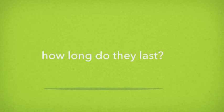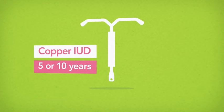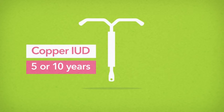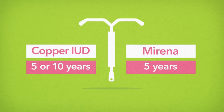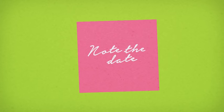How long do they last? The copper IUD will last for five or ten years, depending on which type you have fitted. The Mirena will last for five years. We don't send out reminders when your device is due to be changed, so take a note of this date and keep it somewhere safe.